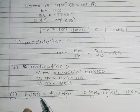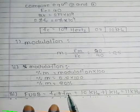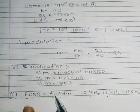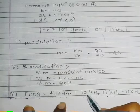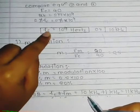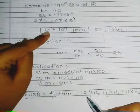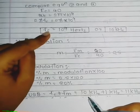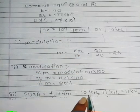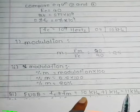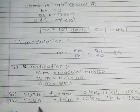The frequency of the upper sideband is the sum of carrier frequency and modulation frequency: FC + FM = 10 kHz + 1 kHz = 11 kHz.